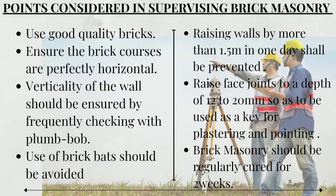Points considered in supervising brick masonry construction: first, use good quality bricks; second, ensure brick courses are perfectly horizontal; third, verticality of the wall should be ensured by frequently checking with a plumb bob; fourth, whenever work is stopped, brick masonry should be left toothed; fifth, use of brick bat should be avoided; sixth, raising walls by more than 1.5 meters in one day shall be prevented; seventh, raise face joints to a depth of 12 to 20 mm to be used as a key for plastering or pointing; and eighth, brick masonry should be regularly cured for two weeks.